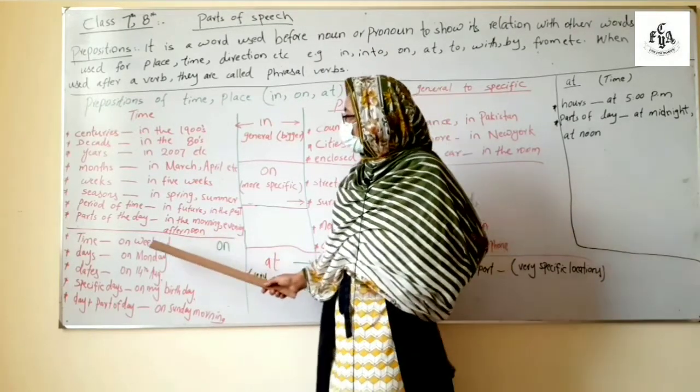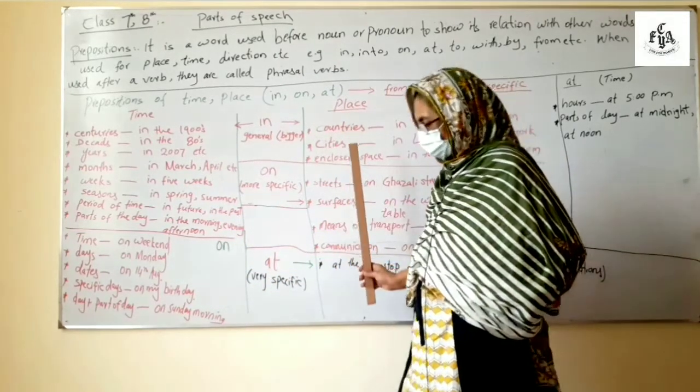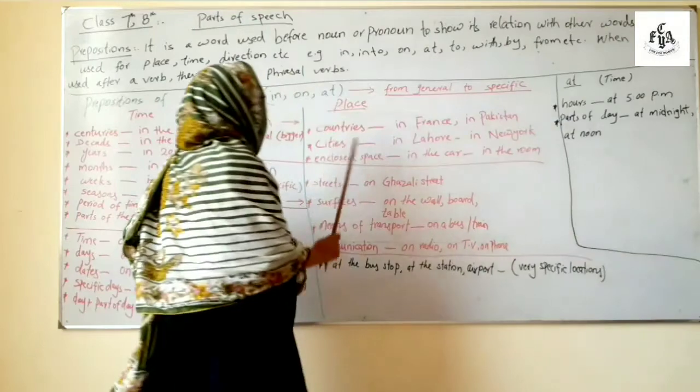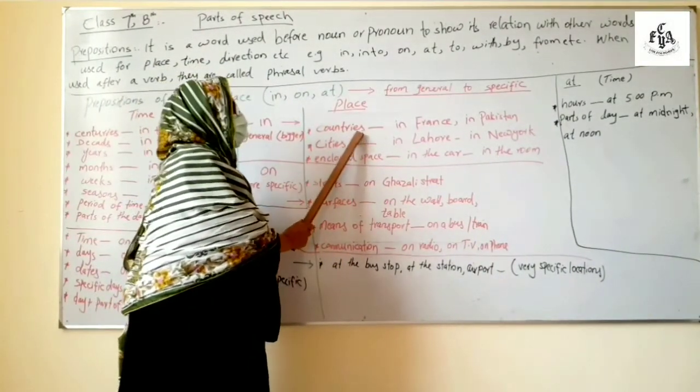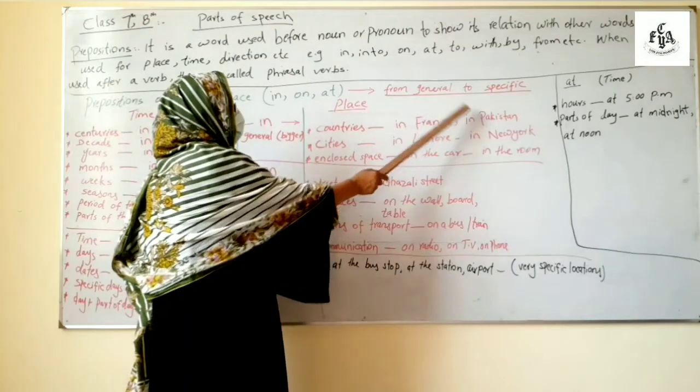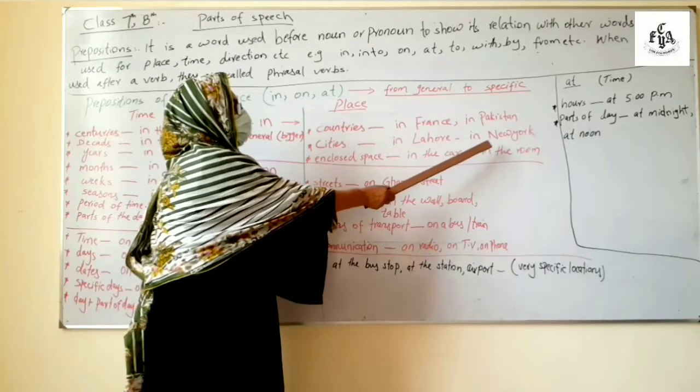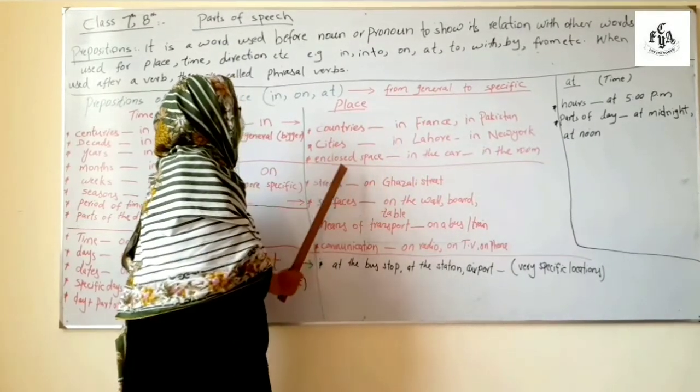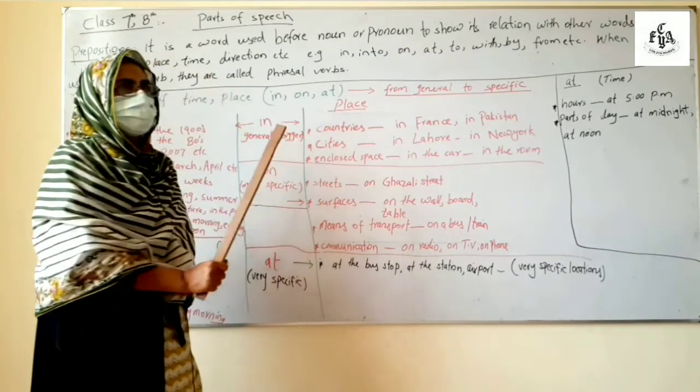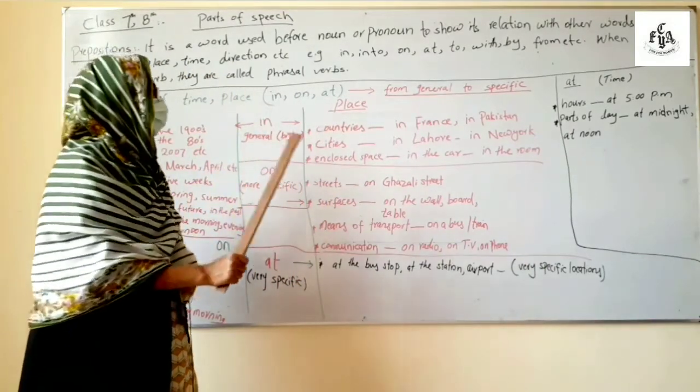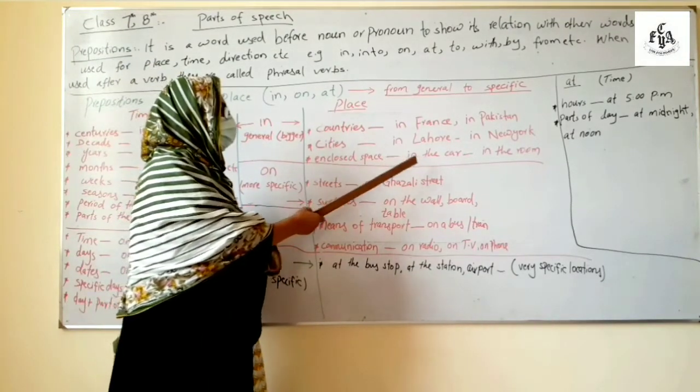And now the same in for a place from bigger place to smaller. It is used before name of countries in France, in Pakistan, before the name of cities like in Lahore, in New York. Before enclosed space like this is enclosed space with boundary walls for such places like in the car, in the room, in the forest.